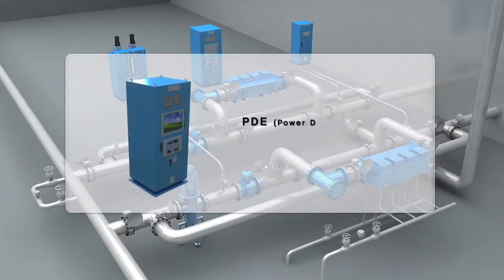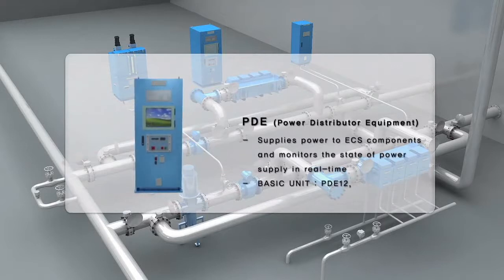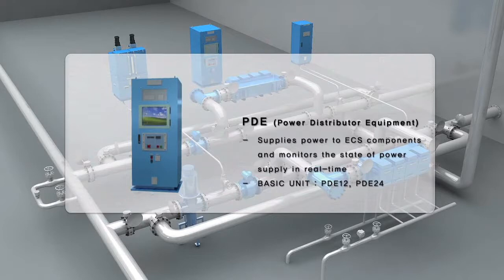PDE supplies the necessary current to the chamber after converting 440 volts AC to DC depending upon the salinity of the water, enabling operational controls and facilitating ECS electrolysis.